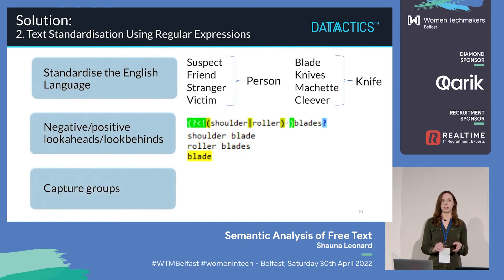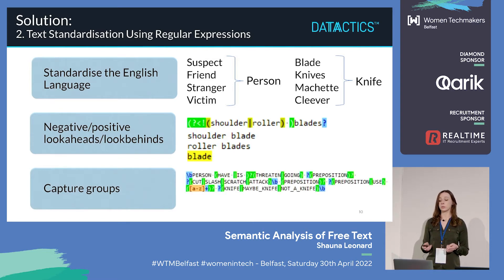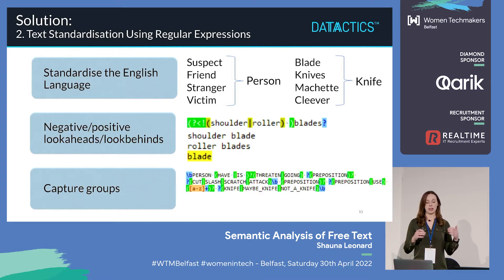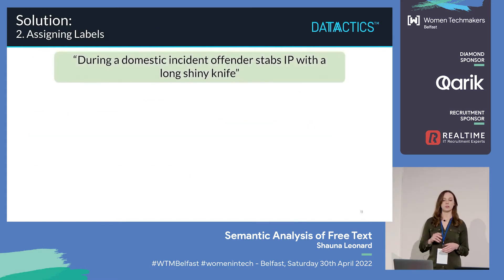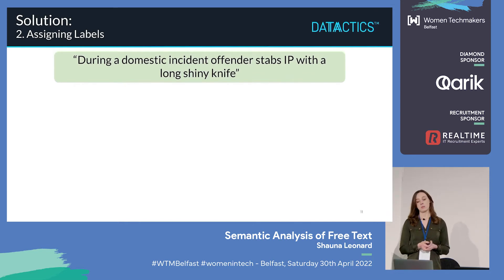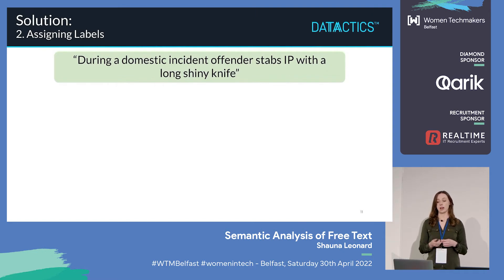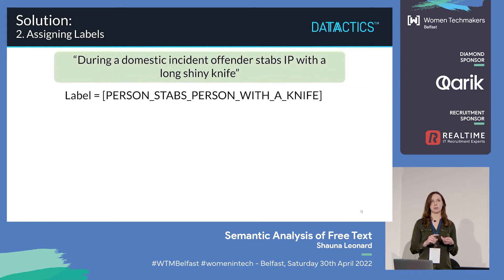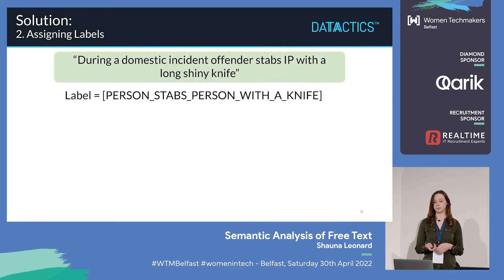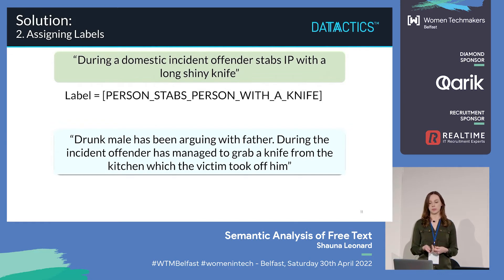We also make use of capture groups. Once we've standardised the whole sentence, we can use capture groups — the bit in between the brackets — so instead of having a row for every different type of verb, we can just use the capture group, which is dollar sign four, and it'll pick up any different type of verb. Part two of step two is assigning labels to what we've just standardised. An example of a free text field — this is dummy data, not based on real data — is: 'during a domestic incident, offender stabs IP with a long shiny knife.' IP here stands for injured party. We can assign the label: 'person stabs person with a knife.' 'Offender' has been standardised to 'person', 'IP' has been standardised to 'person'. We have a list of verbs — stabbed, stabbing, stabs — just get changed to the word 'stab'. A second example: 'a drunk male has been arguing with father. During the incident, offender has managed to grab a knife from the kitchen, which the victim took off him.' That will get a label of 'grabs knife'.